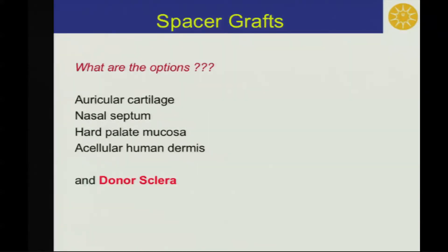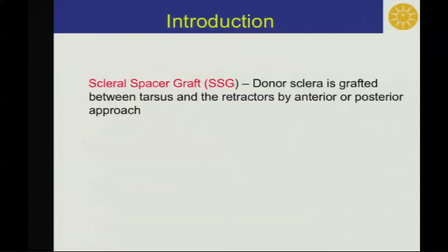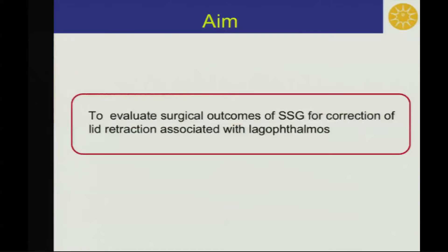For spacer grafts, we can use auricular cartilage, nasal septum, hard palate mucosa, acellular human dermis, and donor sclera. Donor sclera is grafted between tarsus and retractors by anterior or posterior approach. The aim of this study is to evaluate surgical outcomes of scleral spacer grafting for correction of lid retraction associated with lagophthalmos.